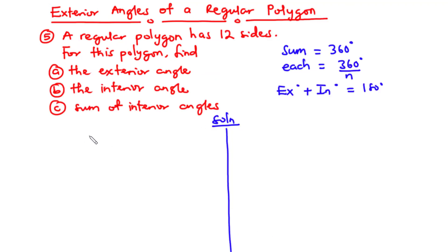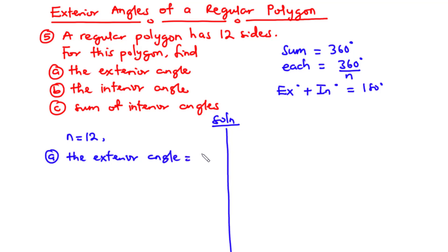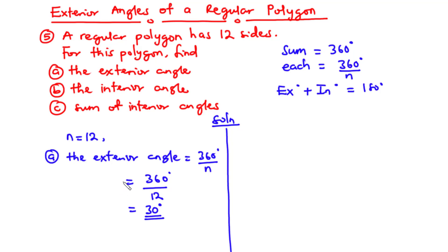For this polygon, N equals 12. The exterior angle equals 360 divided by 12 = 30 degrees. That is the value of each exterior angle of this regular polygon.